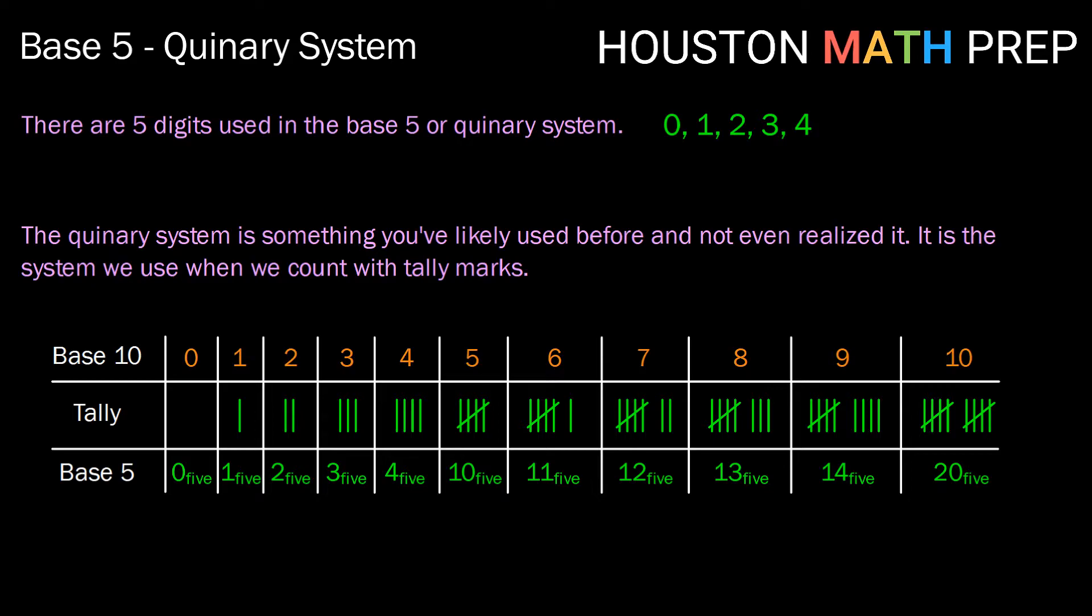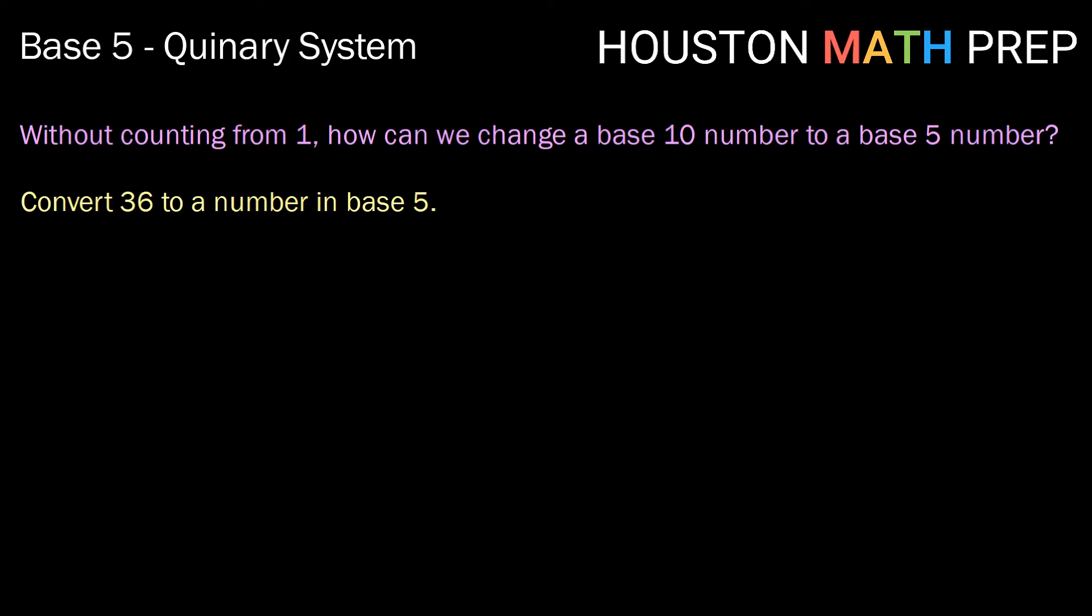Now you might be thinking, well, what happens if we get more than 4 groups of 5? Well, then we would move to a new place value and start counting groups of 5 squared or 25. So let's think about, now that we know how to count in the quinary system, without counting from 1, is there a systematic way to change a base 10 number into a base 5 number?